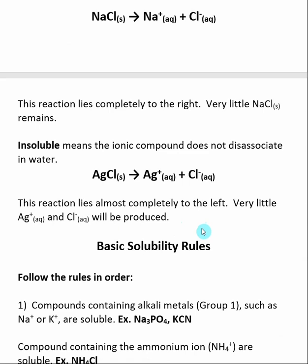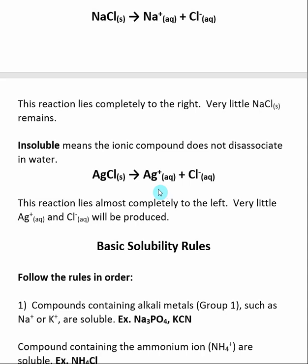We can also have ionic species that are considered insoluble in water, meaning the ionic compound does not dissociate when put into water. Here we have an example: AgCl solid, which is considered insoluble in water. Although it can dissociate into its ionic species, insoluble means this reaction lies almost completely to the left. When we add AgCl to water, very little of it dissociates into Ag⁺ and Cl⁻ — this dissociation is virtually invisible to the eye. Some of it will dissolve, and we will discuss this later when we cover solubility products, but we expect very little Ag⁺ and Cl⁻ to be present in solution.